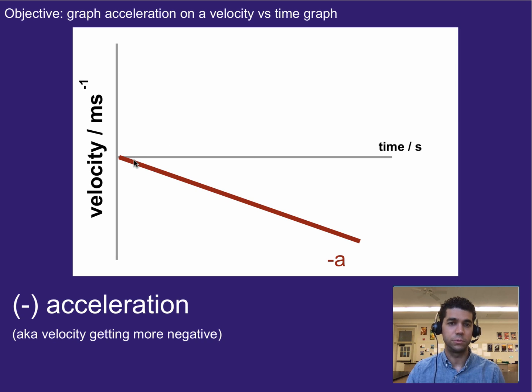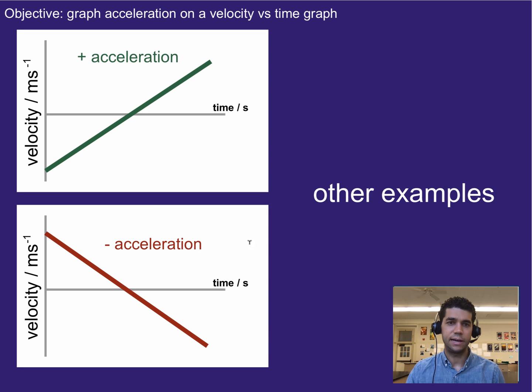Negative accelerations then would be downward slopes. And some other ways that might look like would be like these, where it doesn't always have to be in the positive part of the graph, it just needs to be a positive or upward slanting slope for a positive acceleration. And a negative acceleration would be a downwards slanting slope.